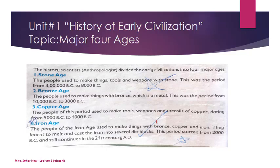In the previous lecture we discussed the first two ages: the Stone Age and the Bronze Age. In the Stone Age, we learnt about different peoples that lived in caves and made different things with the help of bones. They used these things to decorate their houses, did cave paintings, and made bone crafts. In the Bronze Age, people made things with the help of a metal called bronze.